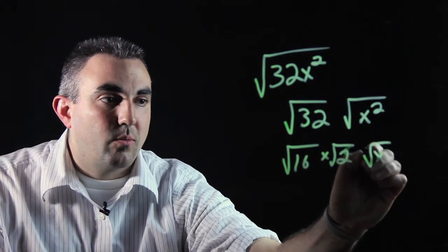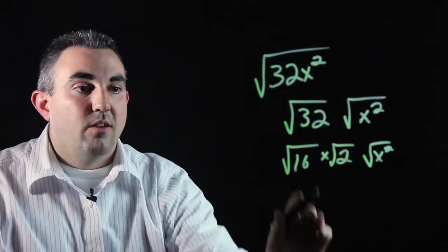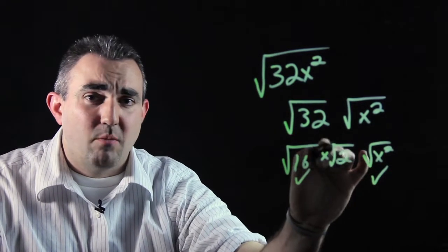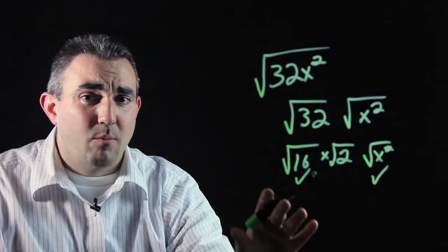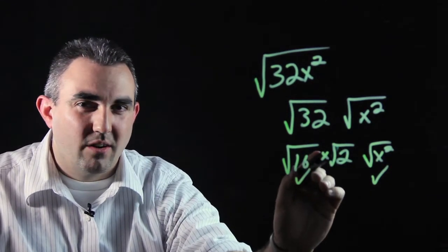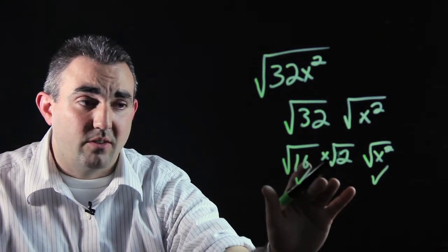You also have this x squared over here to worry about as well. So you have a perfect square here, you have a perfect square here, and this 2 is not a perfect square because 1 times 1 is 1, and 2 times 2 is 4. So you're looking at some weird decimal number in order to get this to be a perfect square.